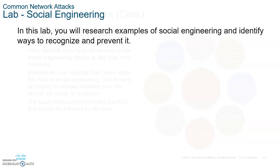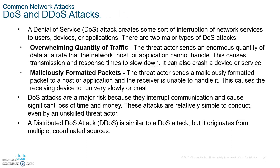Moving on to denial of service attacks — there are two methods: overwhelming quality of traffic and maliciously formatted packets. The idea is to prevent users from accessing their resources. For example, a distributed denial of service attack involves millions of servers sending bogus requests to a target like Amazon's server, so legitimate users can't access it — and that can cost them billions of dollars.